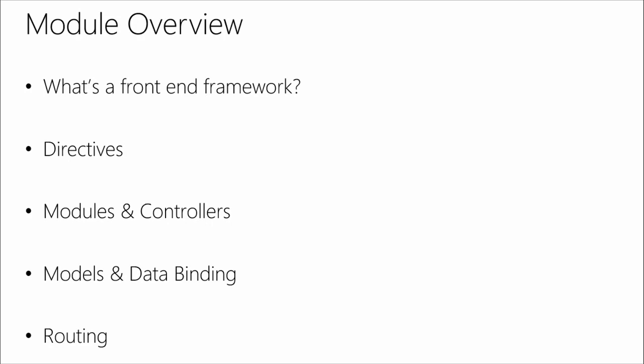Today we're going to start by talking about what is a front-end framework. We'll go into directives — which is essentially how you insert Angular code into your HTML document — modules, which are the application containers for any Angular app, controllers where you put application logic, as well as models and data bindings for displaying data to users. We'll also go into routing. Routing is typically something done in the back-end, but you can actually do that within a single-page application through Angular routing.